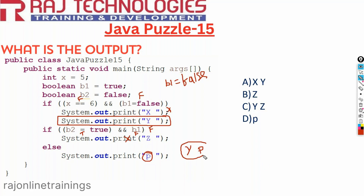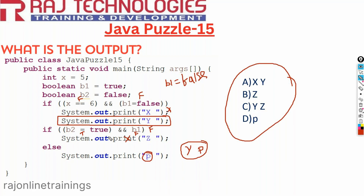So the output would be y and p. But if you look at the options, there is no option called y and p. Then what is the correct output? The explanation we just did was wrong. Even if some people might mark a similar option, it is not the correct one. Let me explain the correct answer.